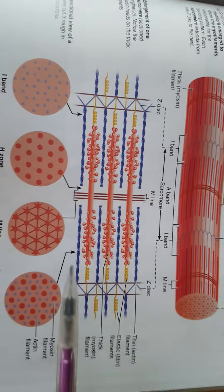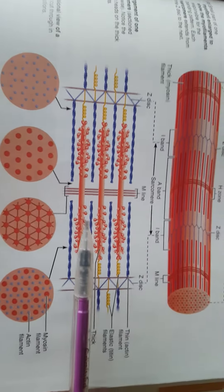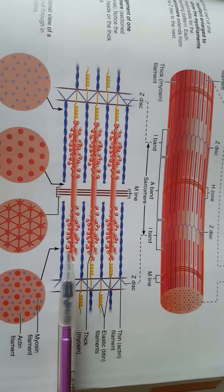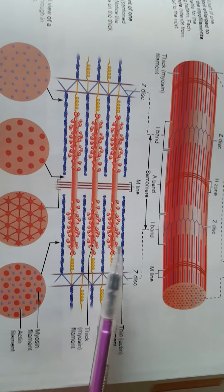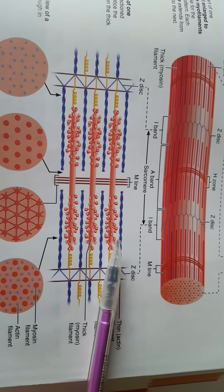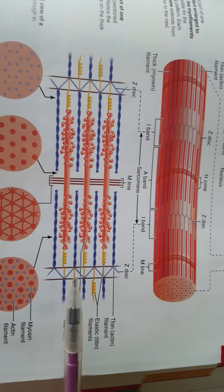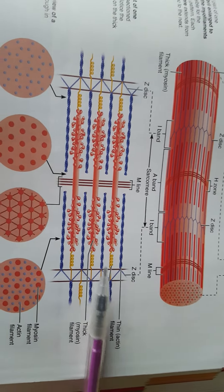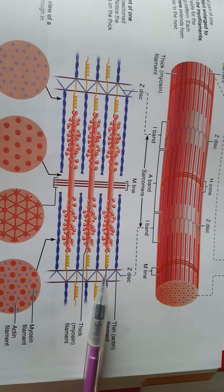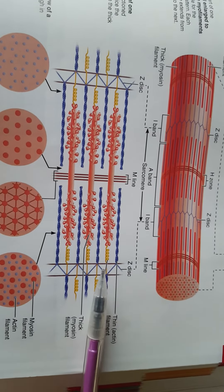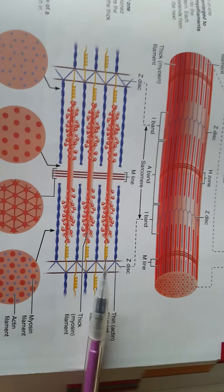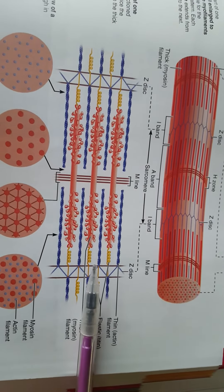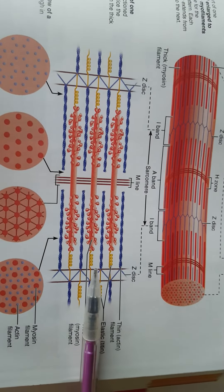Taking a look here, we can see the red myosin, the blue actin, and those proteins that hold the myosin and anchor them to the z-disc. Those little proteins are referred to as titin.